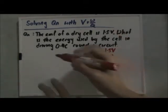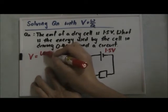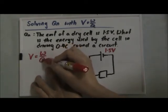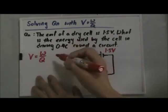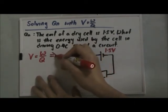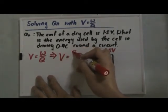We can use this formula: V equals work done over charge. We want to find the energy, and energy and work done can be used quite interchangeably. So we can actually write down the formula as voltage equals energy over charge.